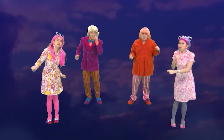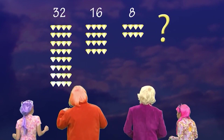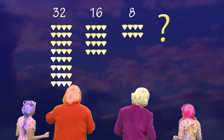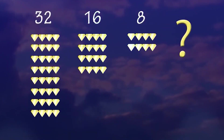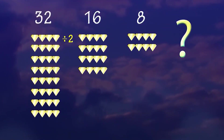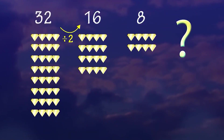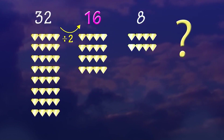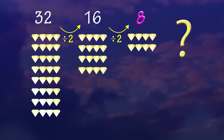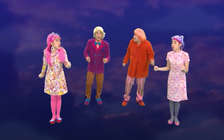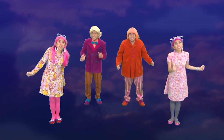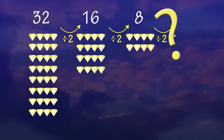Parang hinati ang bilang ng mga diamonds. Tama! 32 divided by 2 is 16. At 16 divided by 2 is 8. Sa 2! Ang missing term ay 4!